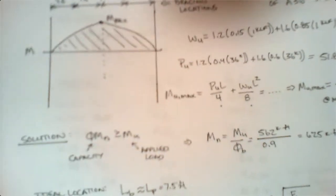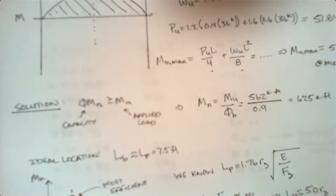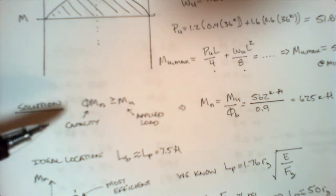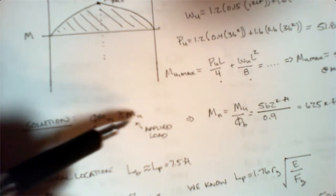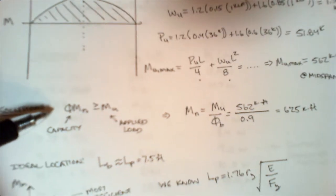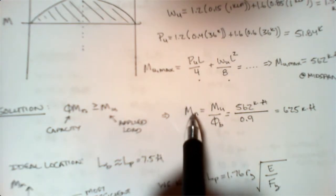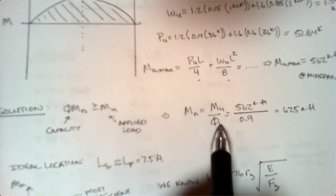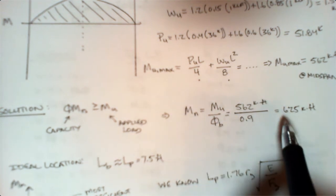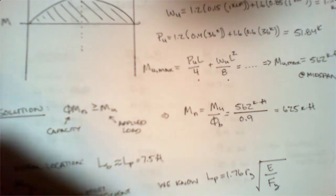That's 562 kip-feet at mid-span. To solve this, we're going to calculate the design capacity, which has to be greater than the applied load. I'm going to rearrange and solve for the actual required nominal capacity, which is 562 kip-feet. Phi for bending is 0.9, so that will be 625 kip-feet.